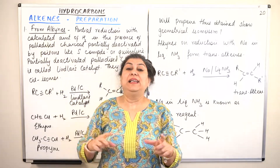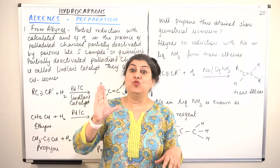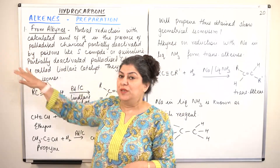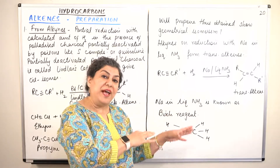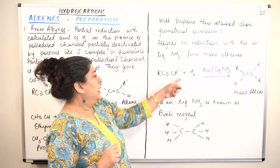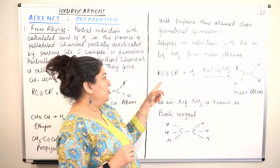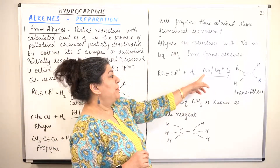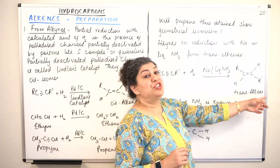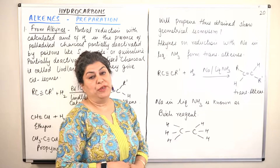So when your aim is to obtain a specific isomer of an alkene, you will prepare that alkene from alkynes. If you want only the cis isomer, you will use Lindlar's catalyst. If you want the trans isomer, you will use Birch reagent. Again, this is the alkyne with R and R' alkyl groups on the two triply-bonded carbons. Partial reduction takes place in the presence of sodium in liquid ammonia, and in this case you get the trans alkene. Sodium in liquid ammonia is known as Birch reagent.